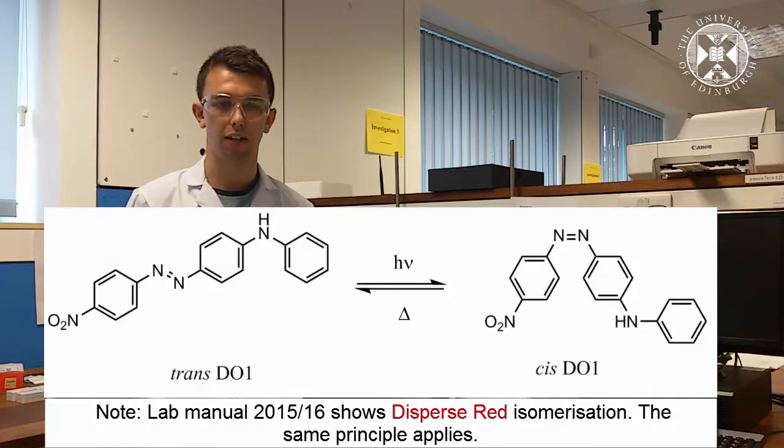Welcome to this pre-lab video for experiment 2. The aim of this experiment is to measure the rate constant for the isomerization reaction from the cis-ground state to the trans-ground state of disperse orange 1.